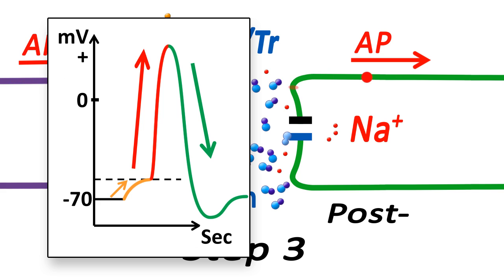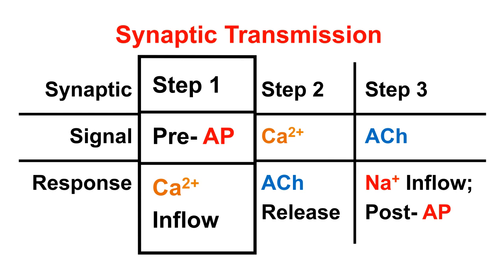Let's review the steps. Step 1. The signal is the presynaptic AP. The response is the calcium ion inflow.